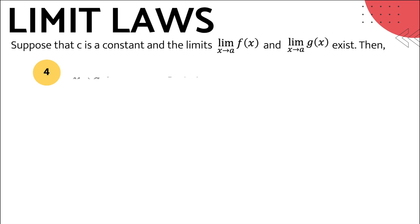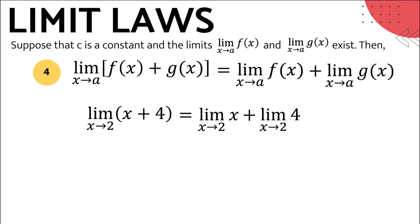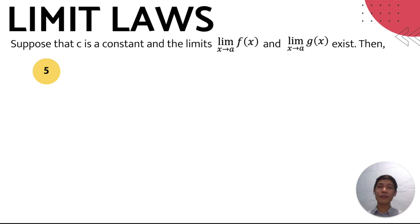The next two limit laws allow you to separate each term, get each of their limits, and combine the limits afterwards. You may apply these limits whenever you're given a function with multiple terms. Limit law number 4 states that the limit of a sum is equal to the sum of the limits: the limit of f(x) + g(x) as x approaches a equals the limit of f(x) as x approaches a plus the limit of g(x) as x approaches a. Example: the limit of x + 4 as x approaches 2. We rewrite it as the limit of x as x approaches 2 plus the limit of 4 as x approaches 2, giving us 2 + 4, which equals 6.